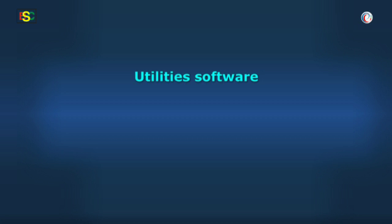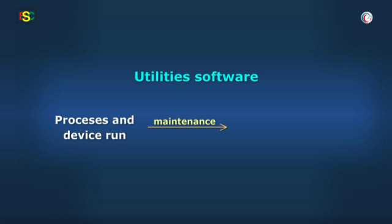As you can see, many processes and many devices run in a computer system. Hence, there is a need for maintenance software. This is done with the help of utilities software.